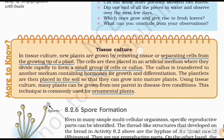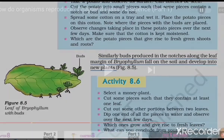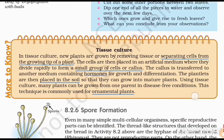In Activity 8.6, select a money plant and cut some pieces. Each piece contains a node and internode. Dip the end of all the pieces into water and observe over the next few days. You can keep the money plant in water and once it grows, it gives rise to fresh leaves. You can conclude that with the help of a stem, you can get a new plant.